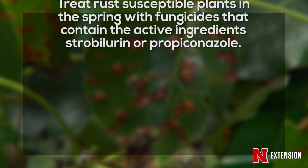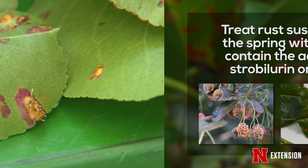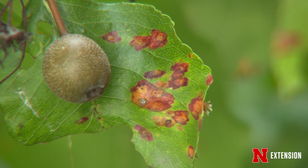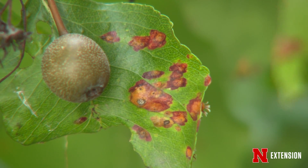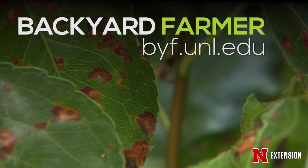Fungicides containing the active ingredients strobulurin or propiconazole are active against rust fungi, but need to be applied earlier in the season. Being mid-August now, we're a bit past the window for treatment. However, early spring, if you know a plant is susceptible to rust diseases, an application of either strobulurin or propiconazole-based fungicide can provide some protection against rust diseases in the landscape.